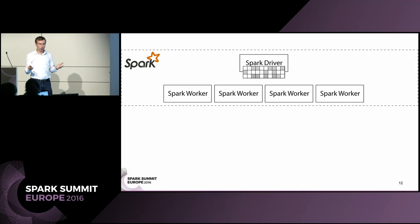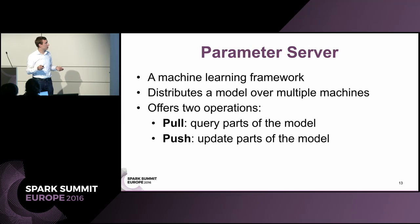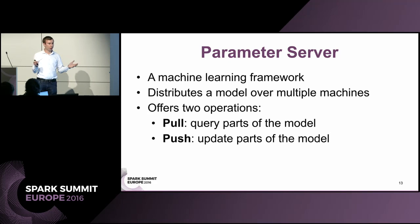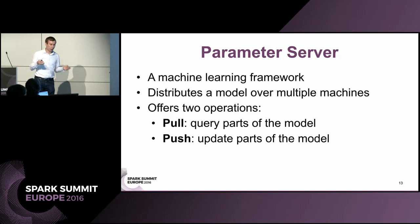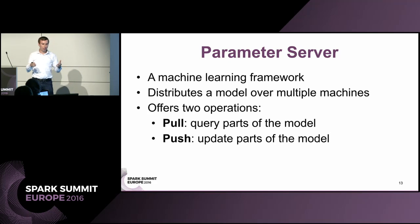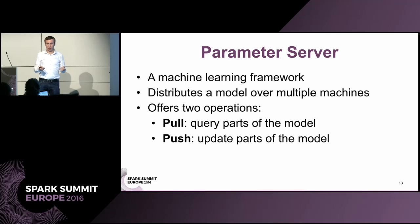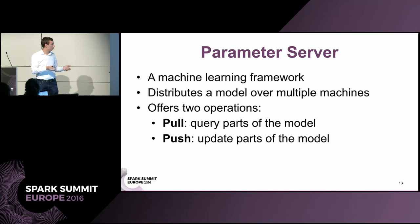One way to solve this problem, proposed in the machine learning literature, is using a parameter server. When introduced, it was a complete ML framework where we take the machine learning model, break it down into little parts, and distribute it out to multiple machines. We then have two simple operations: a pull, which queries parts of our model — essentially a read operation — you just read whatever is in our matrix or vector.